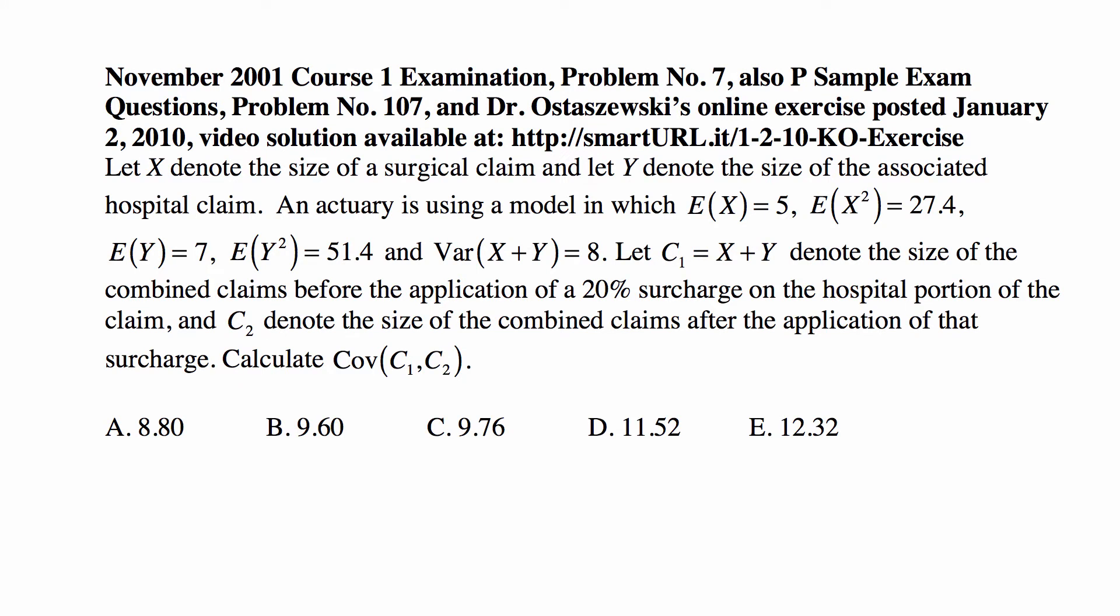Here's a problem posted as a sample problem by the Society of Actuaries. Let x denote the size of a surgical claim and let y denote the size of the associated hospital claim. An actuary is using a model in which E(X) = 5, E(X²) = 27.4, E(Y) = 7, E(Y²) = 51.4,